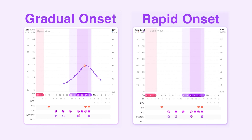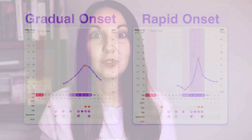A rapid peak is when your LH goes up and down within 12 to 24 hours and could be gone quickly before you even realize, which is why it's really important that you test twice a day during your fertile window.